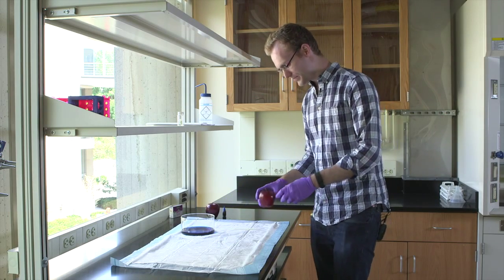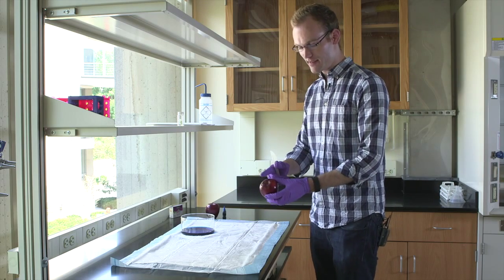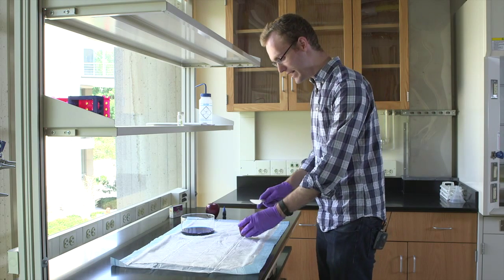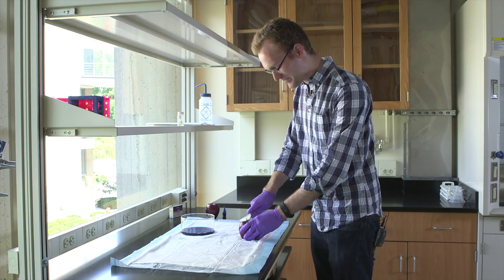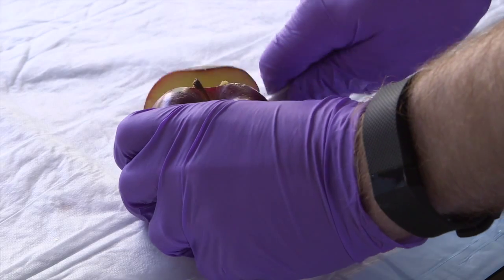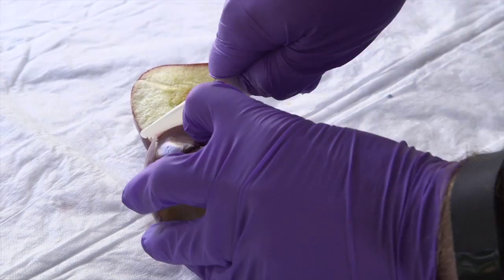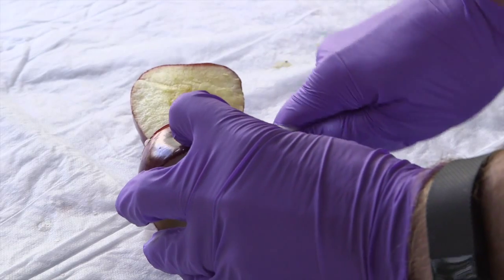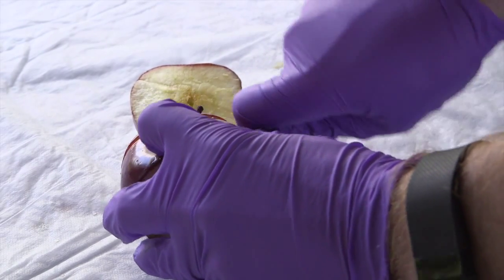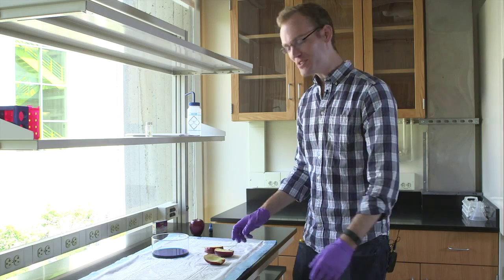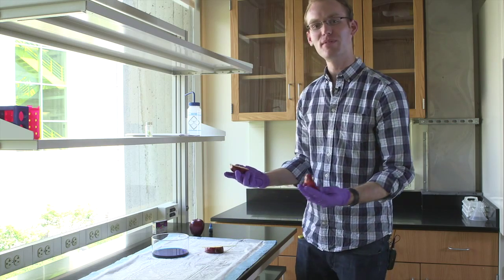Then with the apple, you're going to basically just cut the two sides off, so you have two halves. Okay. So once you have the apple cut, you have these two beautiful halves.